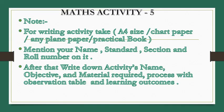Before starting the activity, you have to note down some important points. For writing an activity you have to take F4 size paper, chart paper, or any other plain paper. Don't forget to mention your name, standard, section, and roll number on it. After that you have to write down the activity's name, objective, and material required, then the procedure and process with the observation table. At the end of this activity you have to write down the learning outcome.